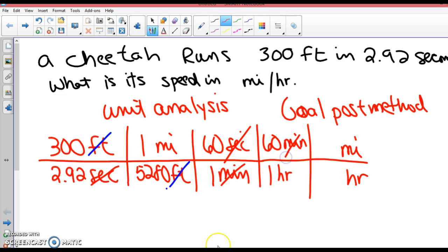Minutes and minutes, gone. So look at my unit analysis. What do I have across the top? Miles. What do I have across the bottom? Hours. Multiply straight across the top.